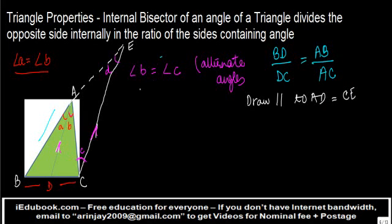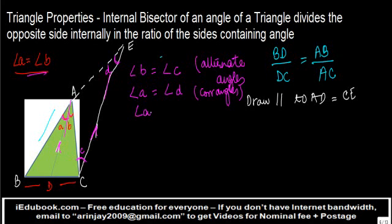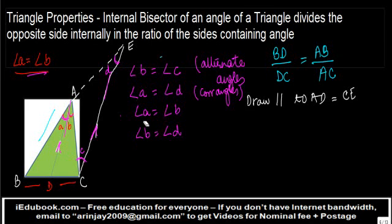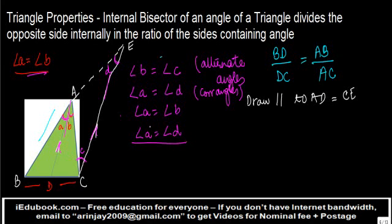Similarly, we also notice that angle a, which is angle 1, should be equal to angle d. Why? Because these are corresponding angles — this line is parallel to this line. And we are given that angle a is equal to angle b. So this means that angle b is equal to angle d, because angle a equals angle b and angle a equals angle d. And we can also say angle c is equal to angle d, because angle a equals angle b and angle b equals angle c. So effectively, angle c equals angle d.